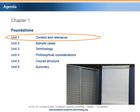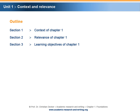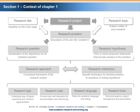Unit 1 – Context and Relevance is divided into three sections. Section 1 covers the context of Chapter 1. This illustration serves as a guide throughout the different course chapters and describes the context of each chapter. The illustration will be explained in Unit 5 of this chapter, and it will be shown how every chapter is embedded within the course structure.